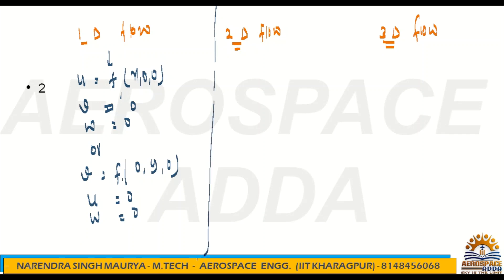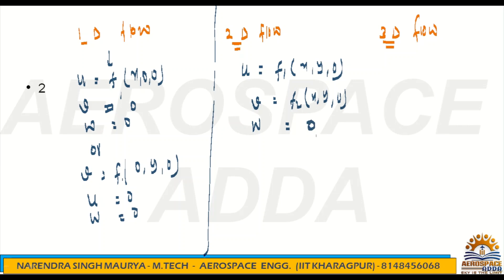2D flow means at least 2 coordinates should be covered. So u must be a function of x and y (with z = 0), and v can be written again as a function of x and y (with z = 0). Omega will be 0. But it doesn't mean omega is always 0 — any two coordinates can be taken: you can take x and y, or x and z, or y and z.